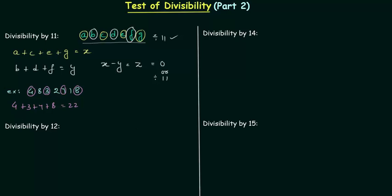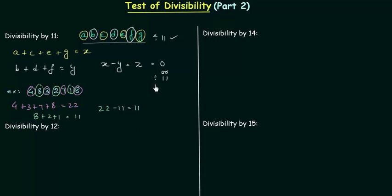We have to find out the sum of digits at even places: 8 plus 2 plus 1 is equal to 11. Now the difference is 22 minus 11 equals 11, and 11 is divisible by 11. So the condition is satisfied and this number is divisible by 11.